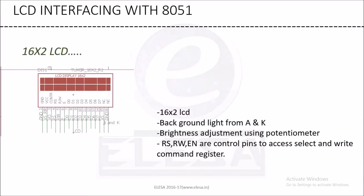Next is the 16x2 LCD. The 16x2 LCD has 2 rows only. A and K pins are connected for the backlight LED. The brightness is adjusted using a potentiometer connected between GND, VCC, and VEE. RS, RW, and EN are control pins to access different registers — either the select register or the write register.